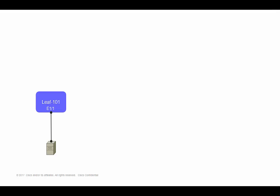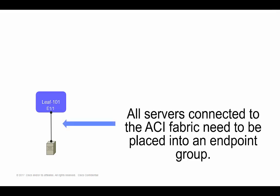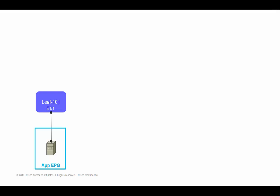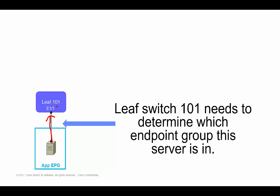When devices are using the ACI fabric, traffic needs to be placed into an endpoint group. Traffic from an Exchange application server might go into the app EPG, while database server traffic would be a member of the database EPG. Traffic coming into the ACI fabric has to be placed into an endpoint group. So we have a problem to overcome: when a server sends traffic to a leaf switch, the leaf switch needs to figure out which EPG that traffic is a member of.